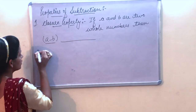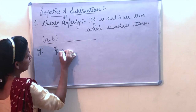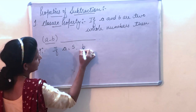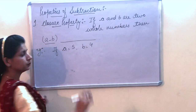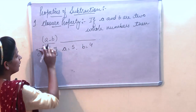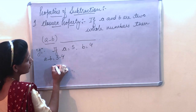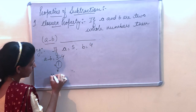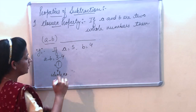Let's verify with an example. If a is equal to 5 and b is equal to 4, then a minus b is 5 minus 4, which equals 1. Here, 1 is a whole number, so in this case the closure property is satisfied.